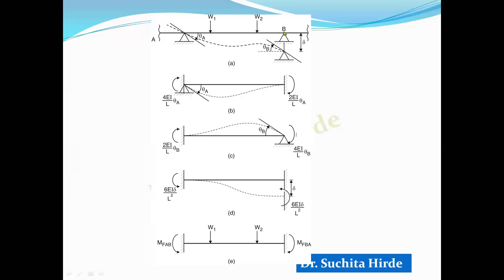In short, the final moment has four factors: one is the contribution from rotation at the near end, second is the contribution from the far end rotation, third is sinking of support, and fourth is the fixed end moment developed due to the load. When we add these, we get the slope deflection equation.